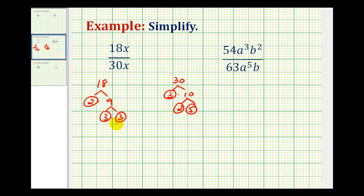So now we'll rewrite the fraction. For 18x, we'll write 2 times 3 times 3 times x. And then for 30x, we'll have 2 times 3 times 5 times x.